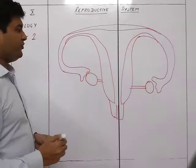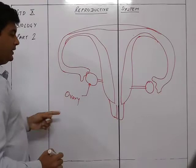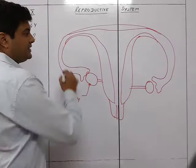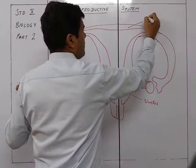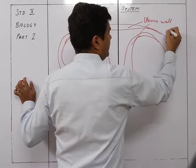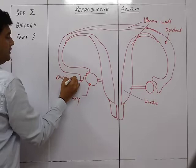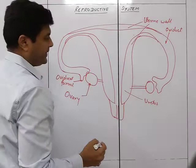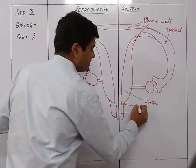In the case of the female, the main primary organs are the ovaries — one ovary on each side. The central part is called the uterus, and these are the uterine walls. This part is called the oviduct, and this is the oviductal funnel. And this part is the vagina. The starting point of the uterus is called the cervix.